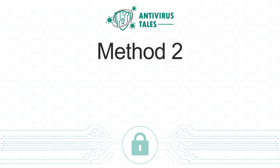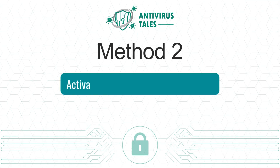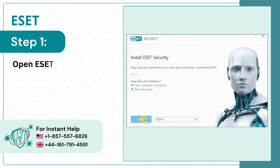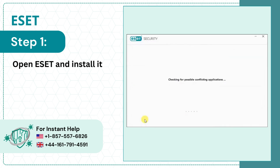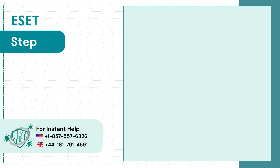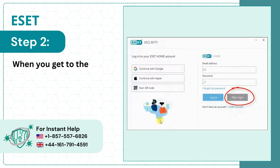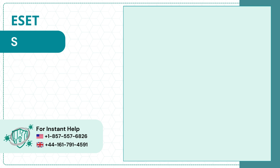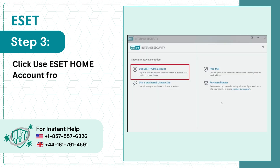Method 2: Activate using email ID and password. Step 1: Open ESET and install it if you haven't already. Step 2: When you get to the login page, click 'Skip Login.' Step 3: Click 'Use ESET Home Account' from the activation options.